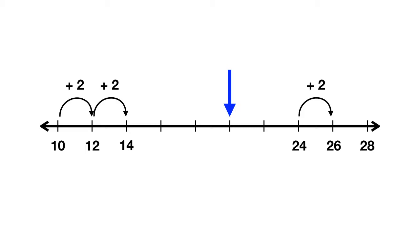So we just had to add 2 until we got to our arrow. 14 plus 2 is 16, 16 plus 2 is 18, 18 plus 2 is 20. And then we can find our arrow is pointing at the number 20.